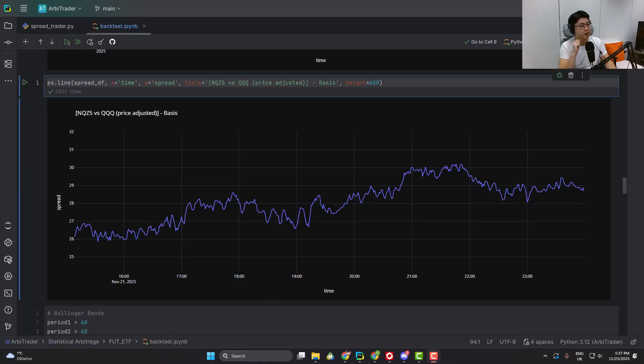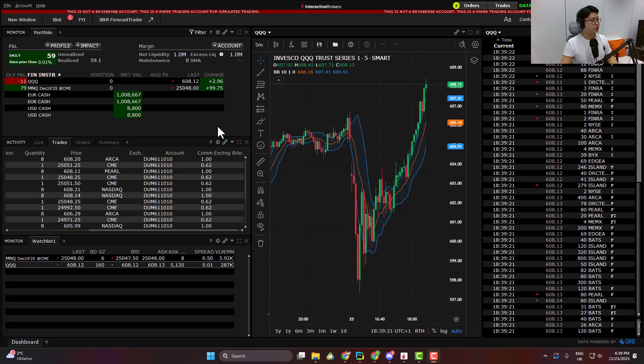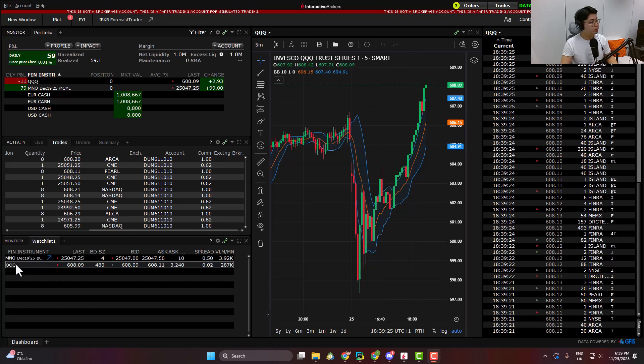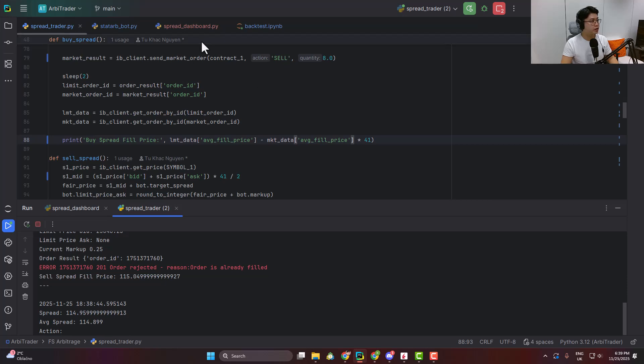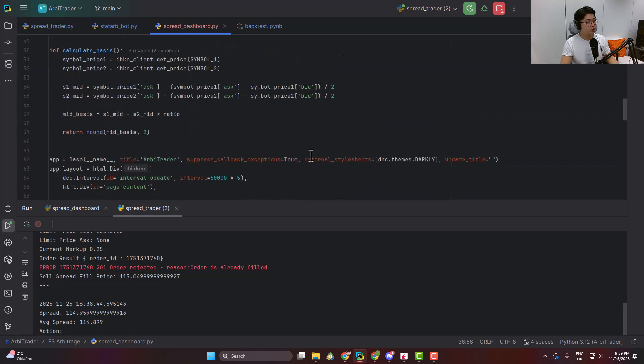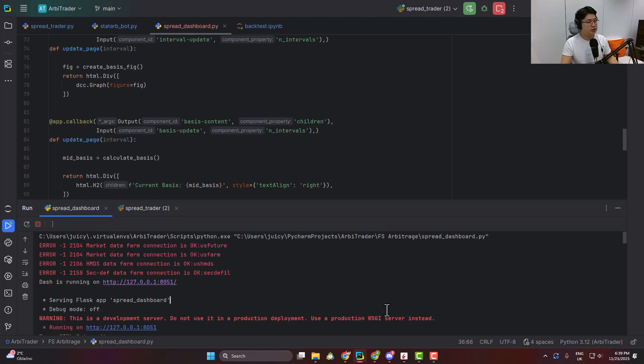Hi guys. Right now I'm looking at the NQZ5 futures contract against the QQQ ETF. What you see here is the basis data for November 21st. Right now what I'm trying to do is I'm going to connect live data from Interactive Brokers, put it into an application so I can see live intraday basis data. Then I'm going to test a script that can open a long or short basis position. Right now I'm connected to my TWS demo account where I have MNQ and QQQ enabled. I am using this live data to feed it into my web application. I created a very simple dashboard that takes the live data and then plots it in a chart.